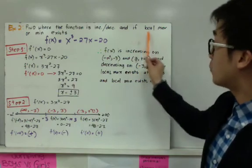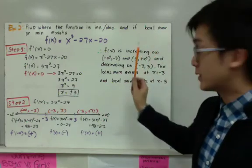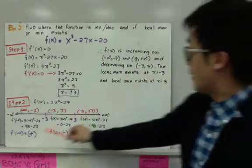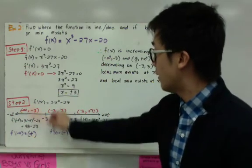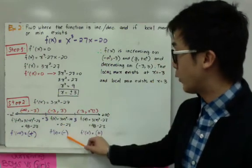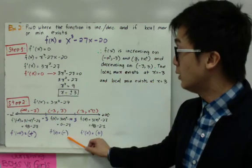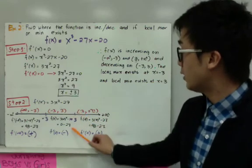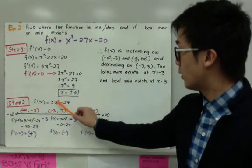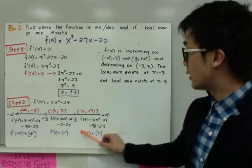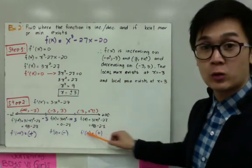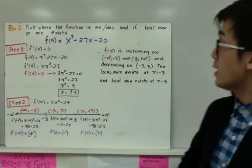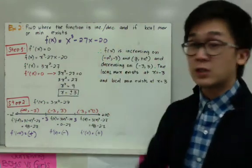To answer whether local maximum or local minimum exist: at x equal to negative 3 the sign changes from positive to negative — going up then down — so there is a local maximum at x equal to negative 3. At x equal to positive 3, the sign changes from negative to positive — going down then up — so there is a local minimum at x equal to positive 3. This is how we organize the answer using the first derivative test.